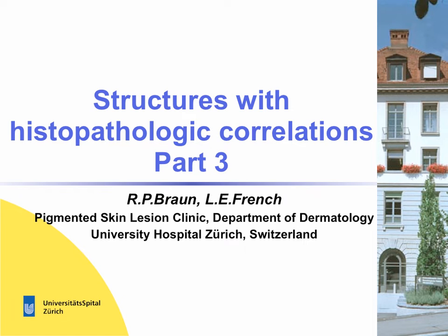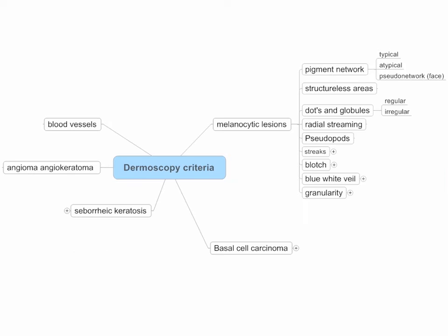Ladies and gentlemen, this is part three of our educational podcast series on structures with histopathologic correlations. My name is Ralph Brown from Zurich, Switzerland. In the previous parts, we covered criteria for melanocytic lesions, pigment networks, structureless areas, dots, and globules.